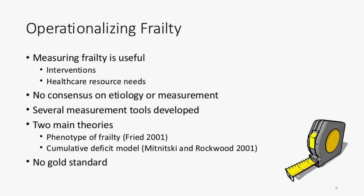Unfortunately, there's no consensus on how frailty comes about or how it should best be measured. There have been several attempts to measure frailty in the past. There are two key main theories: the Fried phenotype of frailty and the Rockwood cumulative deficit model. None of these methods has been established as the clear criterion reference or gold standard for measuring frailty in a population.